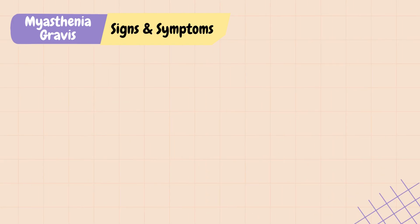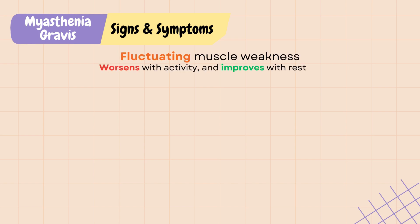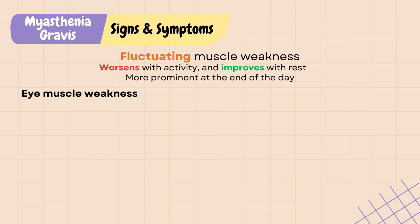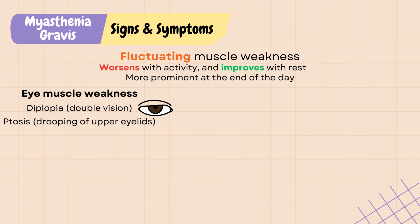A distinguishing clinical feature of MG is fluctuating muscle weakness that worsens with activity and improves with rest, and it is usually more prominent at the end of the day. Around 85% of patients will have eye muscle weakness that results in diplopia, or double vision, and ptosis, or drooping of the upper eyelids.